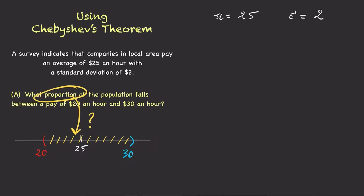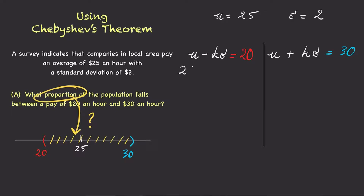To answer this question, we need to know how many standard deviations $20 is away from the mean, or how many standard deviations $30 is away from the mean. Notice that $20 is below the mean of $25 — in other words, 25 minus how many standard deviations equals 20. Likewise, $30 is above the mean of $25 — in other words, 25 plus how many standard deviations equals 30.